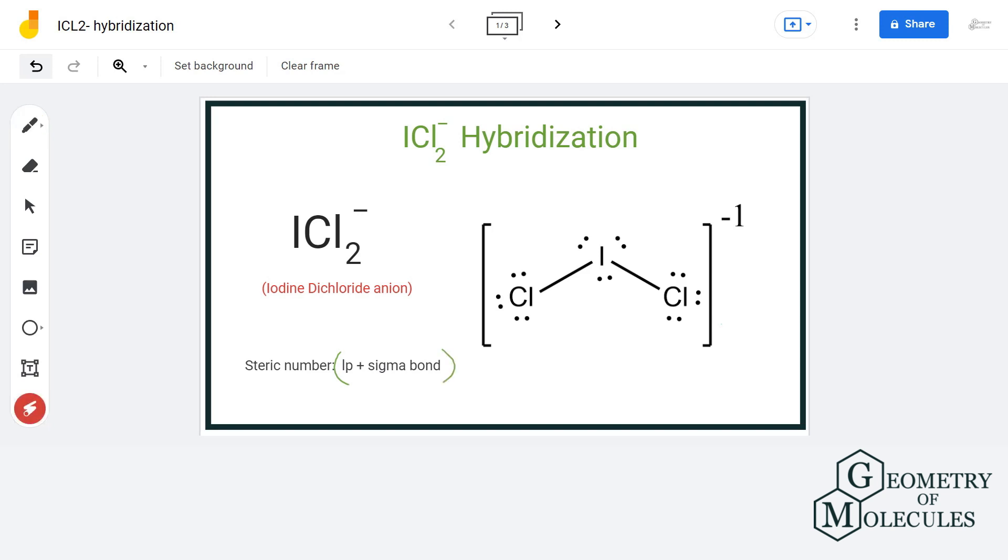So, let us have a look at the Lewis structure of ICl2- ion. We can clearly see that central atom iodine has formed two sigma bonds with two chlorine atoms and it also has three lone pairs of electrons.